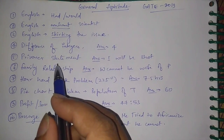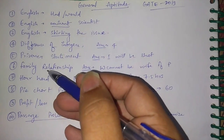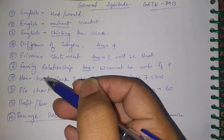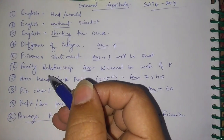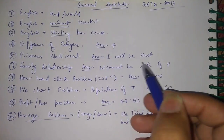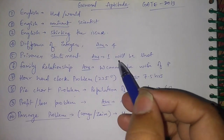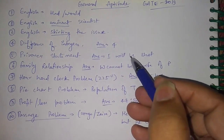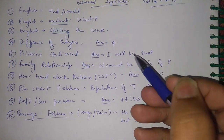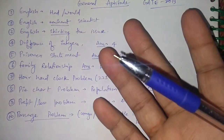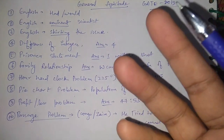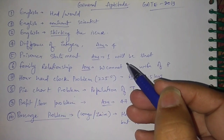There was a question on a prisoner's statement where a prisoner will be hanged if he tells the truth and shot if he tells a lie. What does he say to the judge so that the judge lets him free? The answer is 'I will be shot.' If this statement is true, then he should be hanged — but that contradicts what he said. So the punishment and his statement contradict each other, leaving the judge no choice but to let him free. It was a very good question.